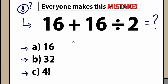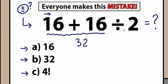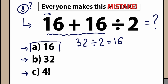Pause the video and write your solution down into the comment section. A lot of students may be saying, okay, right here we have 16 plus 16 divided by 2. Let's go from left to right. As a result, we have 16 plus 16 equal to 32. We still have this division on the right side: 32 divided by 2 equals 16. So a lot of students might be thinking maybe 16 is the correct answer — this is option A.